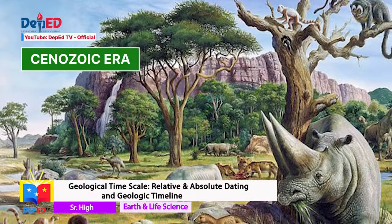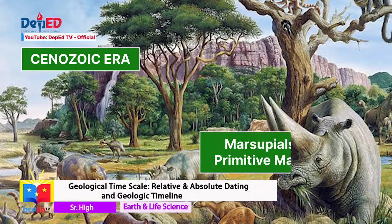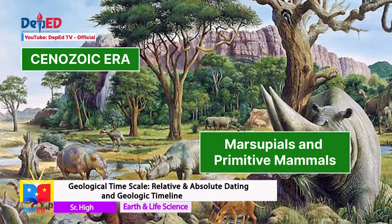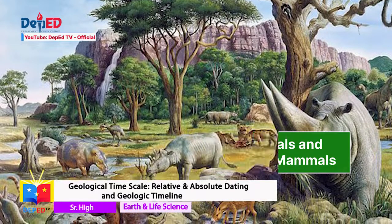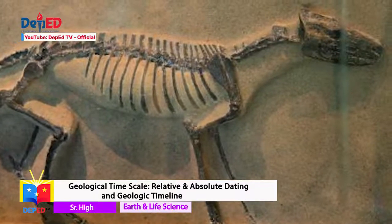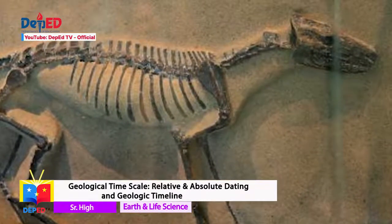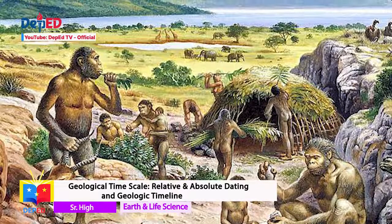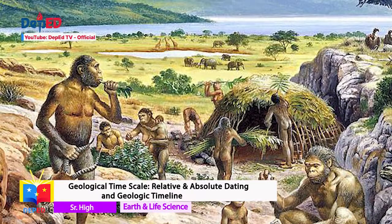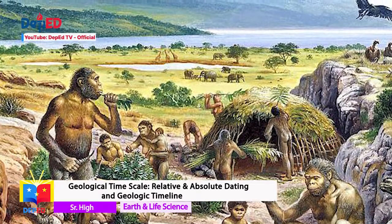Cenozoic Era. Different warm-blooded animals like marsupials and primitive mammals existed on the land. Then they developed into modern horses and birds. During this period, humans left their mark on land. Some of the earliest records of humans were stone tools.